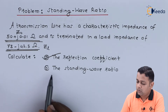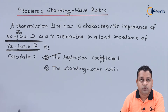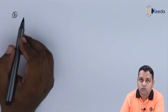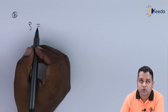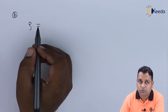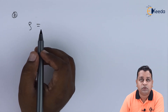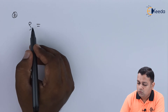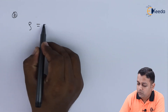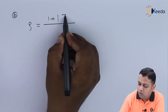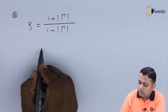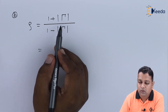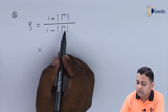Now for part b we require the standing wave ratio. The standing wave ratio, denoted by rho, is related to the reflection coefficient because the standing wave occurs due to the presence of reflections. Rho is expressed in terms of the reflection coefficient as: rho equals (1 plus |gamma|) divided by (1 minus |gamma|), where we take only the magnitude of the reflection coefficient.